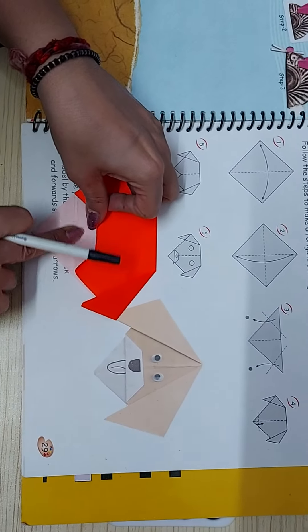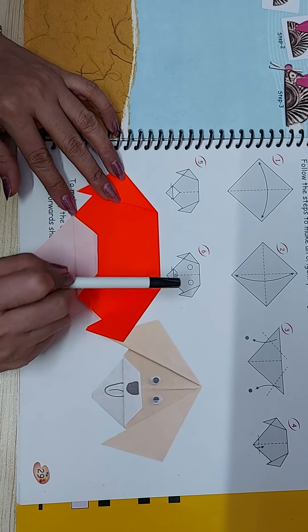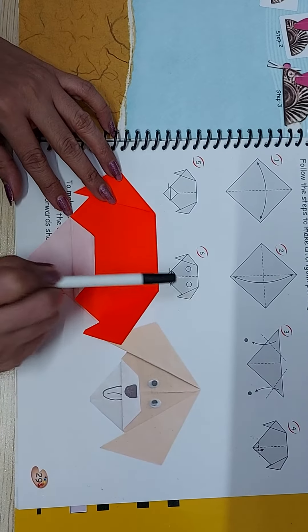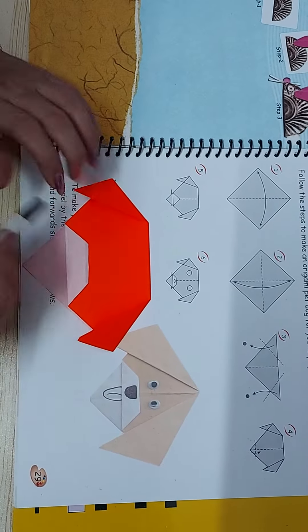I am folding it like this. Now you all have the googly eyes in your packet. You are going to put two googly eyes here.